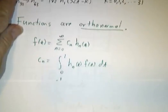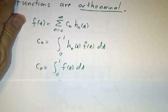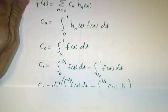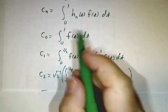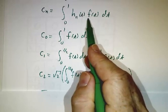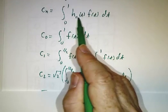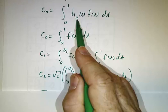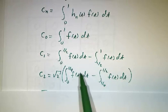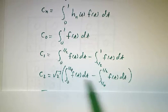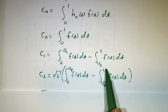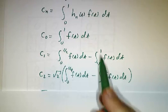So these functions are orthogonal, in fact they're orthonormal. If you want to figure out what a coefficient is, you just multiply the function you're dealing with by this h function and that's just going to be the integral of the original function from say 0 to 0.25 minus 0.25 to 0.5 or 0 to 0.5 minus 0.5 to 1.